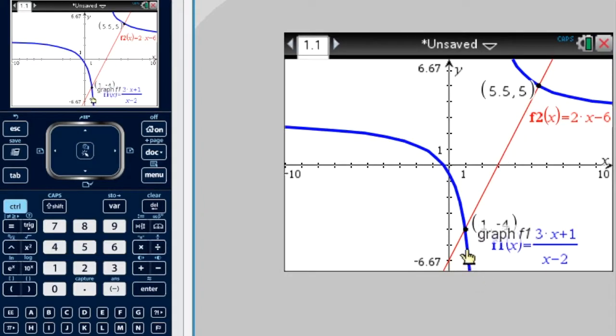However, if we used all of x is bigger or equal to 1, it would include all of this, so even this part here. But this is above the graph, the red graph, so we don't want to include that.